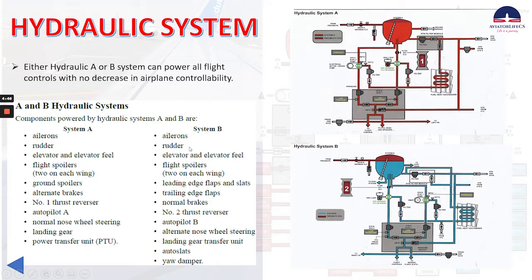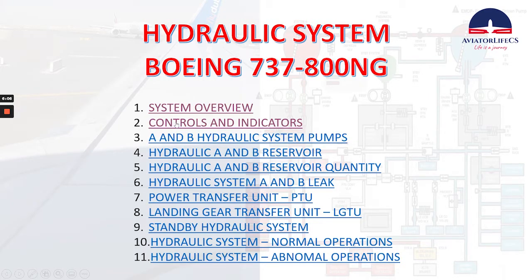System B powers: ailerons as well, rudder, elevator and elevator feel, flight spoilers 2 on each wing, leading edge flaps and slats, trailing edge flaps, normal brakes, number two thrust reverser, autopilot B, alternate nose wheel steering, landing gear transfer unit, auto slats, and yaw damper. And now let's talk about controls and indicators.